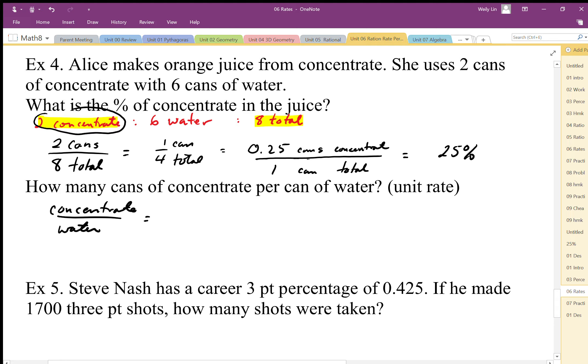Concentrate to water is two cans concentrate to six cans water. We can write this as a unit rate. To get a unit rate, I'm going to divide, and I end up with 0.33 repeating, so I'll round to 0.33 concentrate per water, or 0.33 cans of concentrate per one can of water.